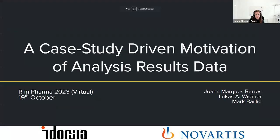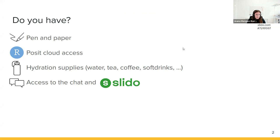Let me start the slideshow. So besides checking if you have access to the Posit Cloud, and besides checking that you have the slider link and access to the Zoom chat, we also recommend having some pen and paper or the digital version of it. It's good to have somewhere to take notes. We plan on making this workshop a bit of a thinking-type workshop. This is a two-hour workshop, so have some water, coffee, or tea at the ready.